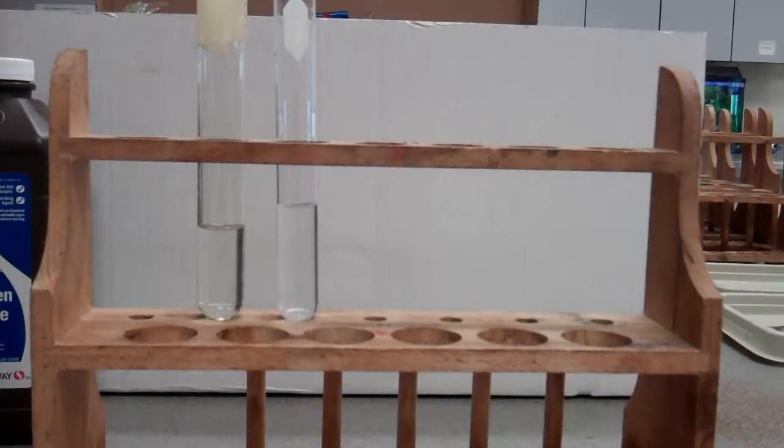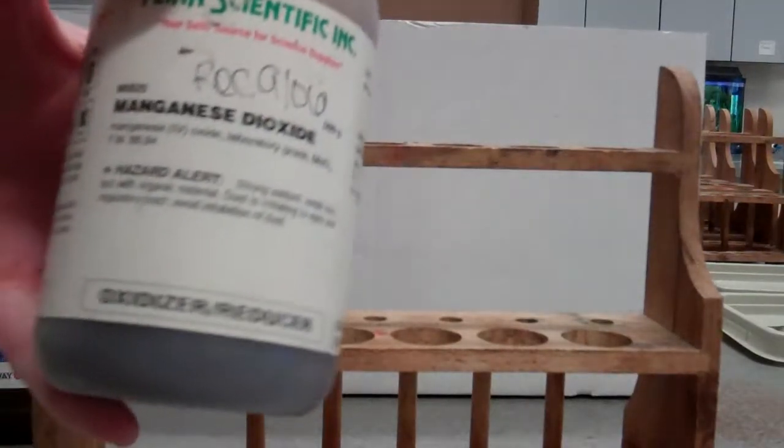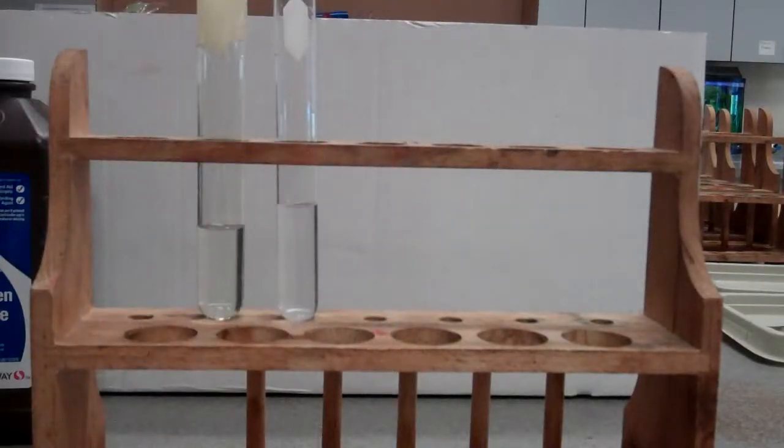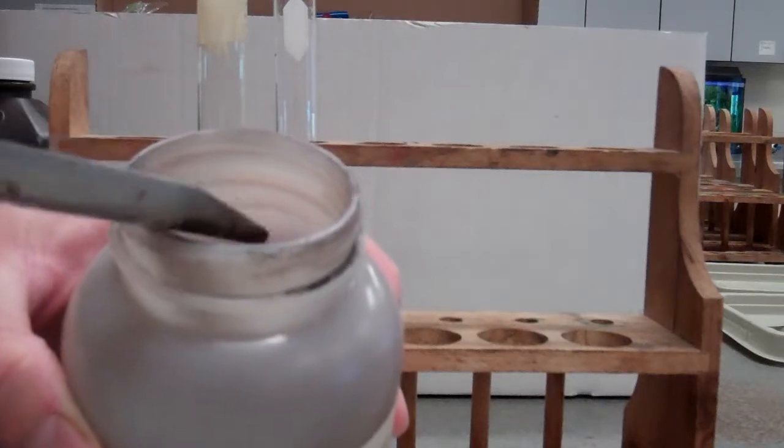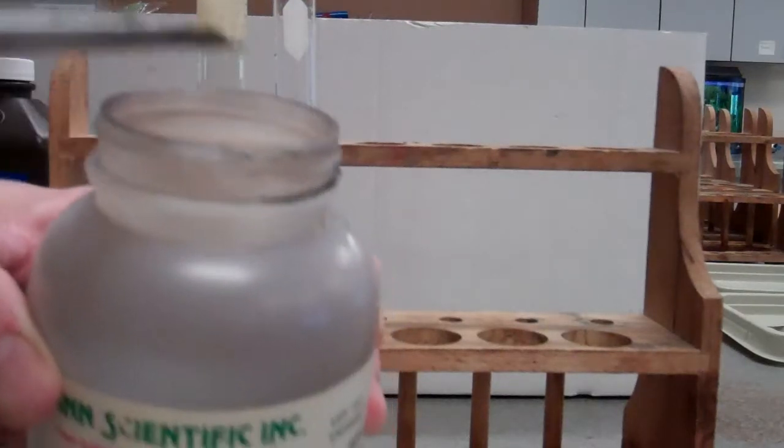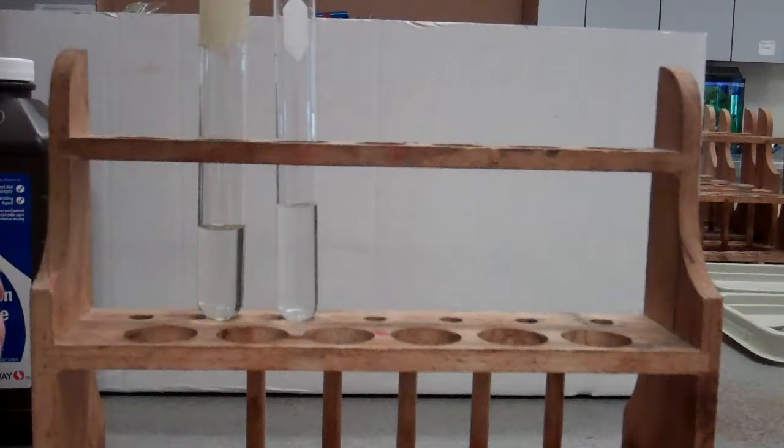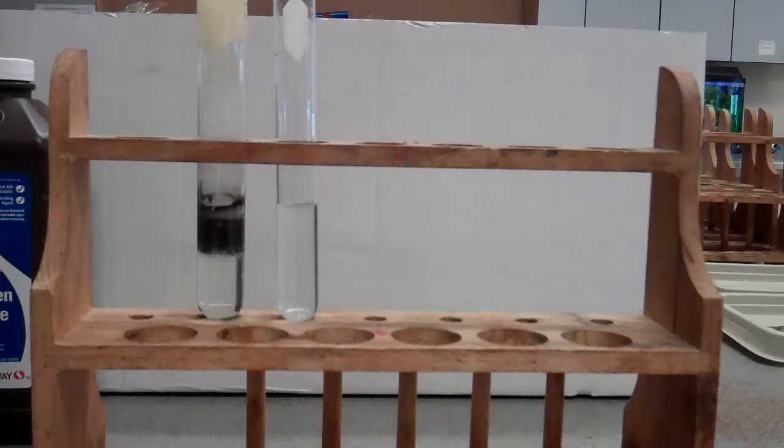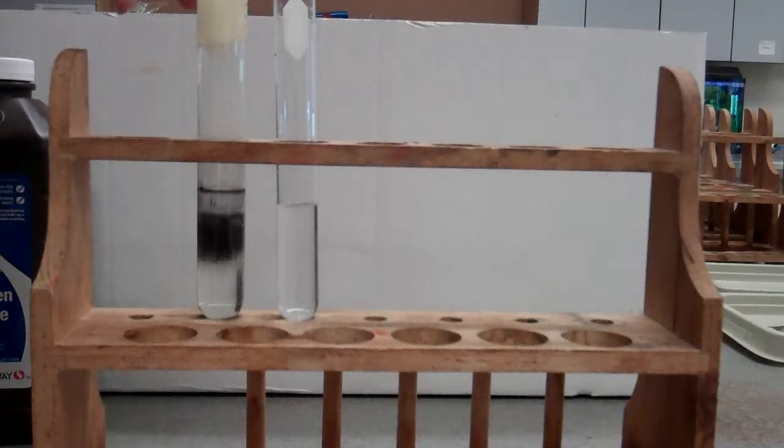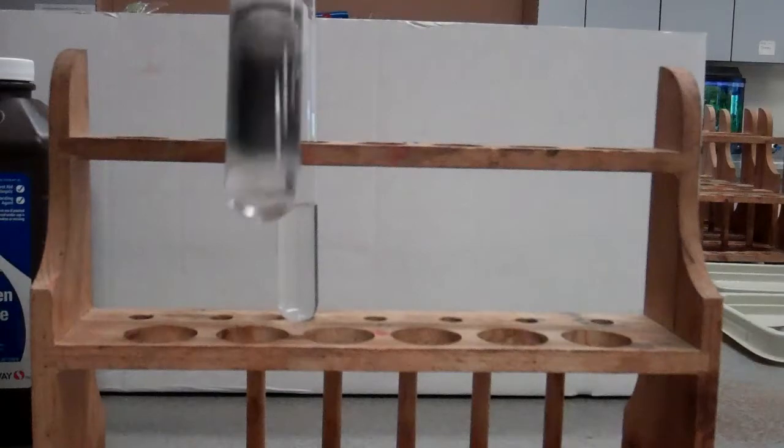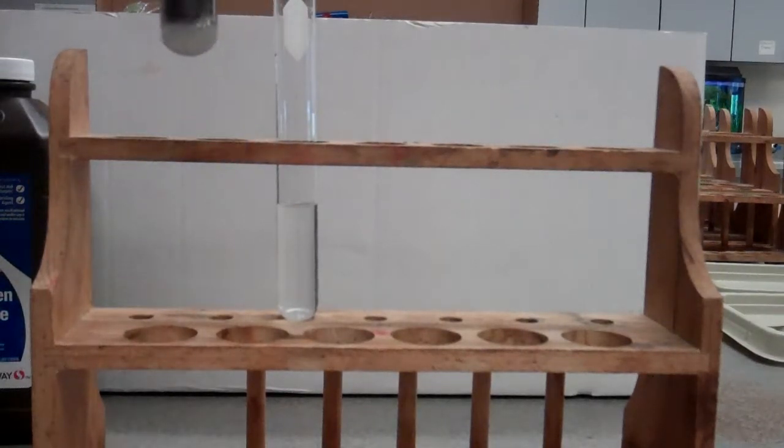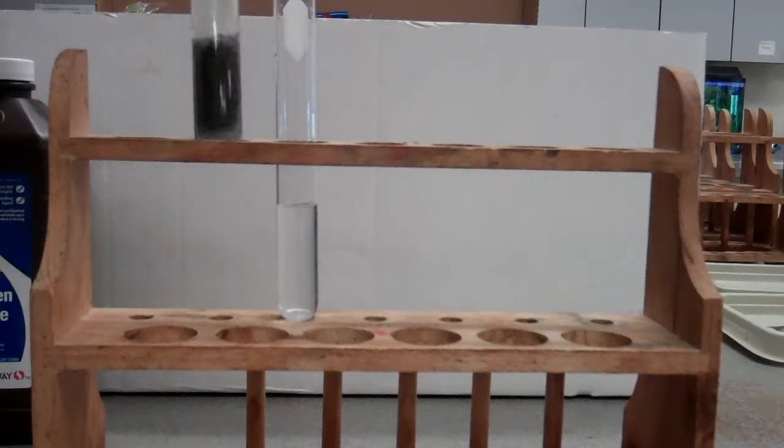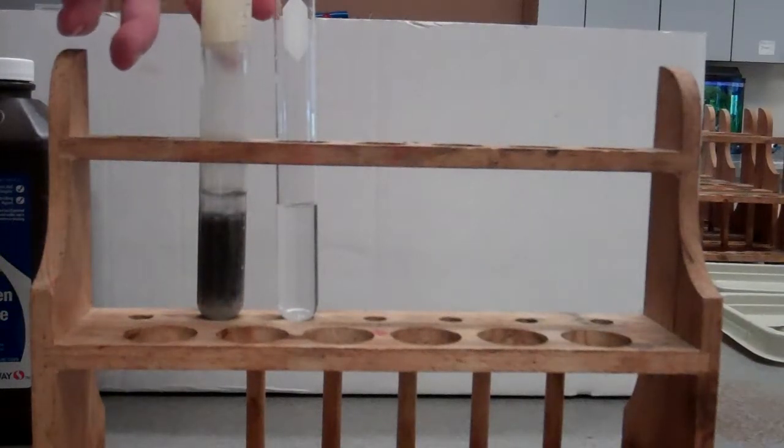The first thing we're going to do is we're going to add a little bit of manganese dioxide. It's black powder. This is a chemical catalyst. It's a chemical. We get it out of a jar. We're actually seeing some of the steam or smoke coming out of here.